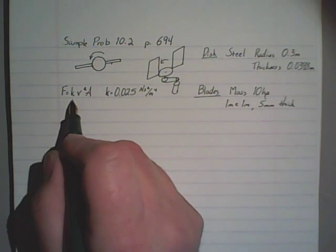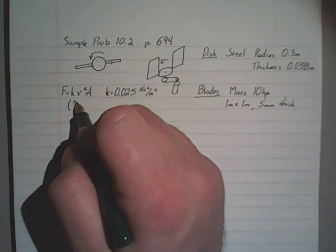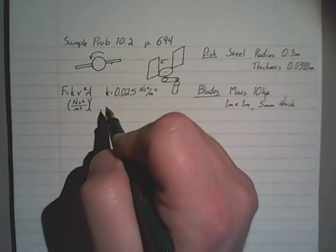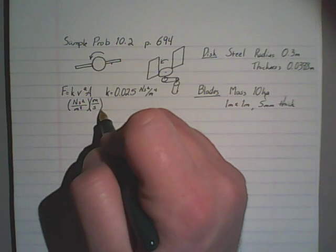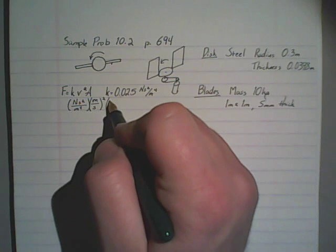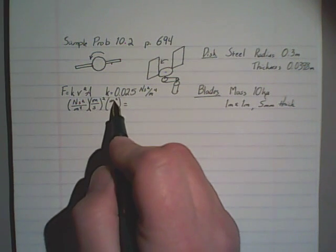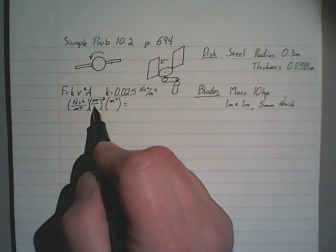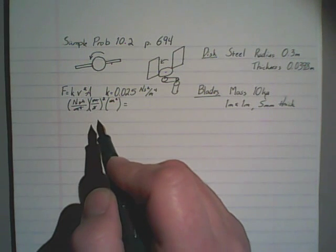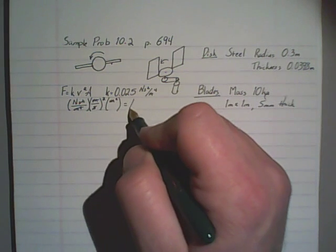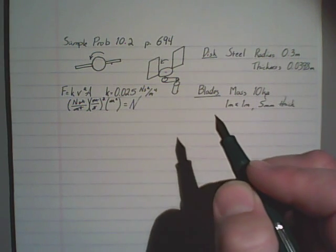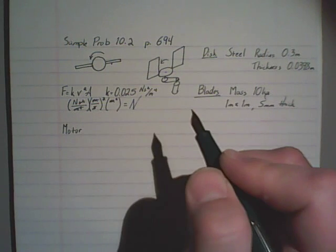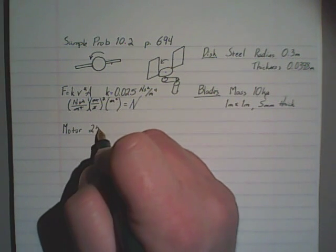Just to double check then for the source calculation, we have Newton seconds squared over meters to the fourth for K. For linear velocity we have meters per second and that's squared. And for the area we have meters squared. So if I cancel out, squared meters cancel out entirely, second squared cancels out the one in the constant, and I do end up with a resultant of newtons of force. So that makes sense. This motor we are told generates a torque of 25 newton meters.